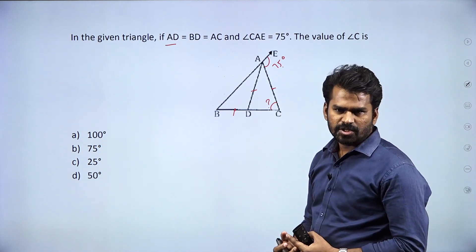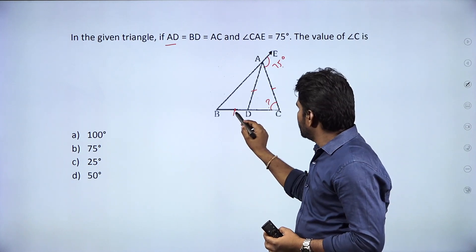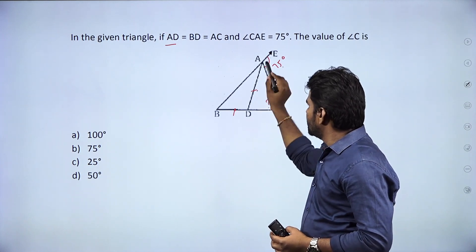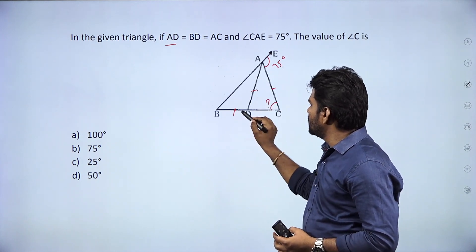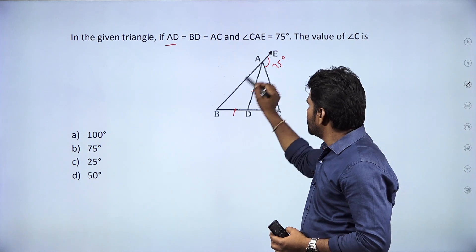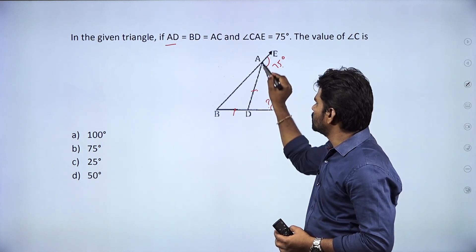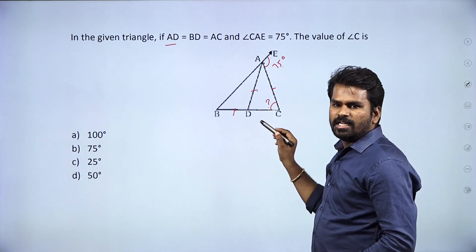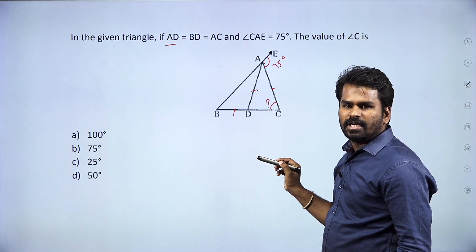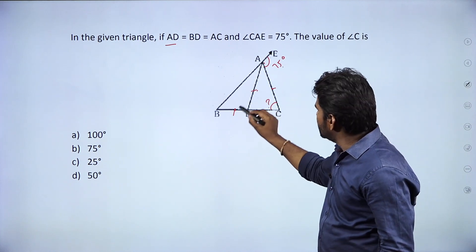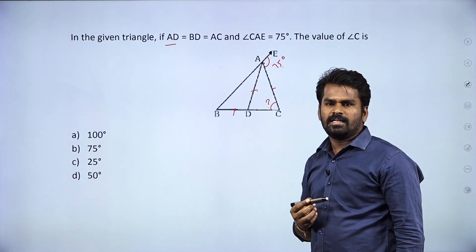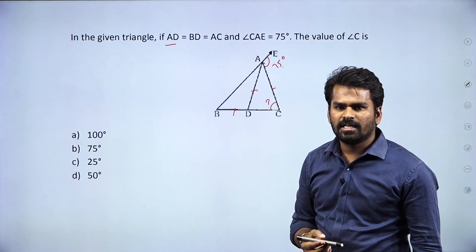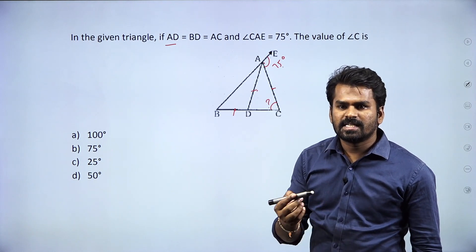If you look at this, AD and BD — AD equals BD. This is a triangle. If you look at this triangle, what is equal about these two sides? It is an isosceles triangle.